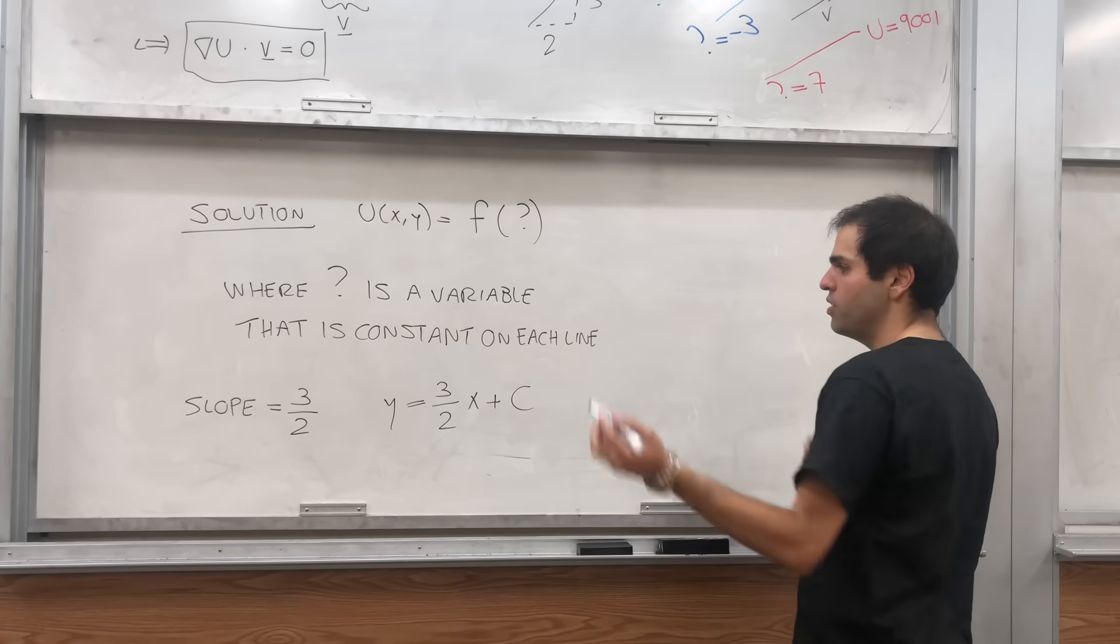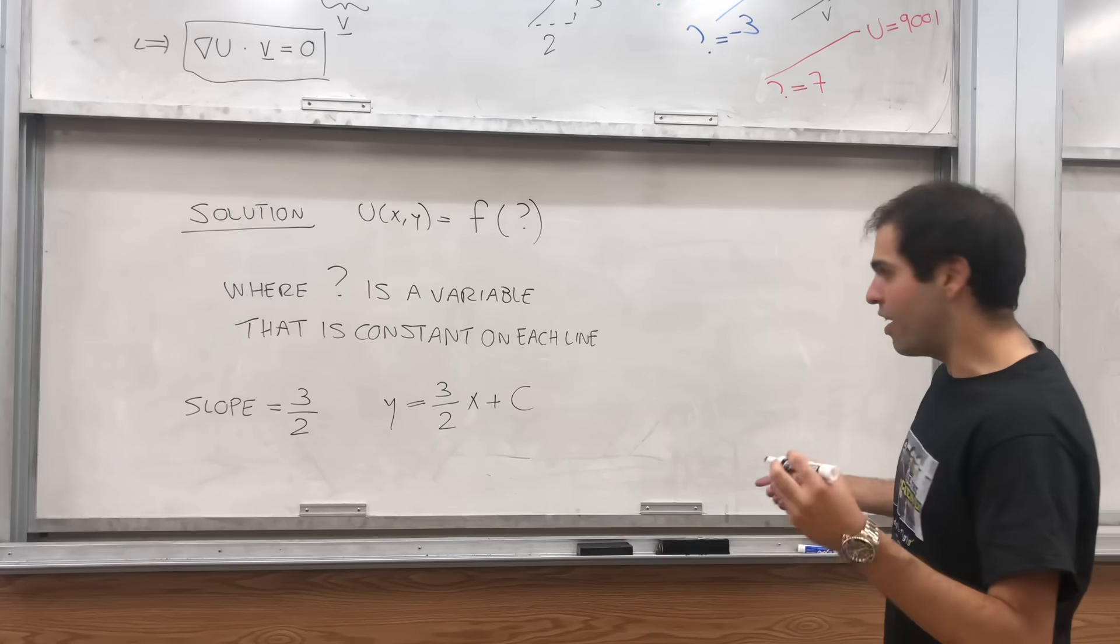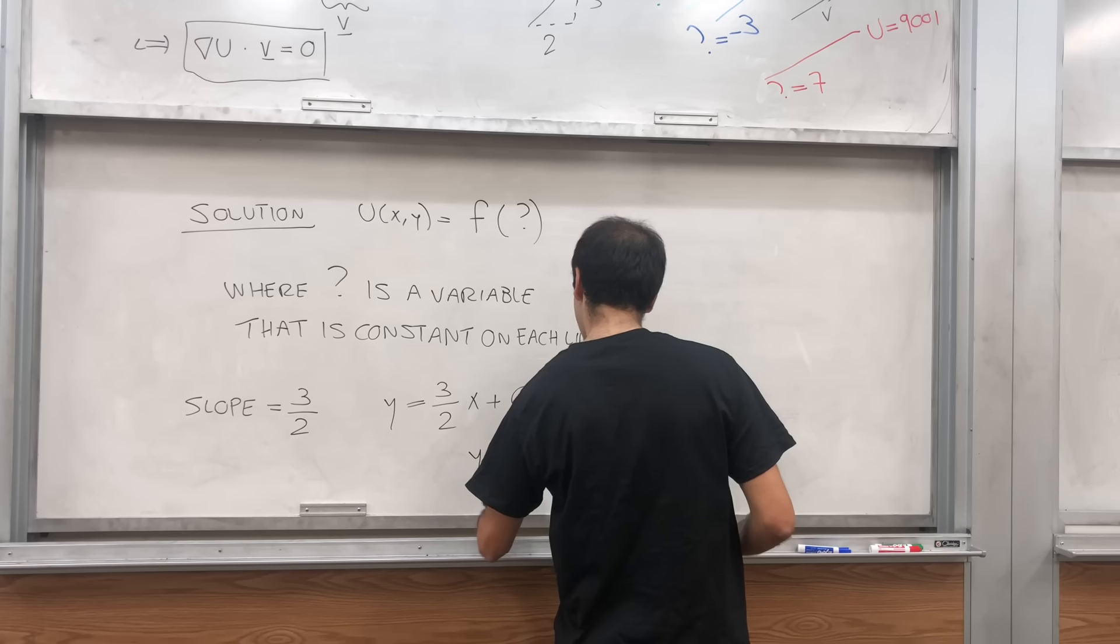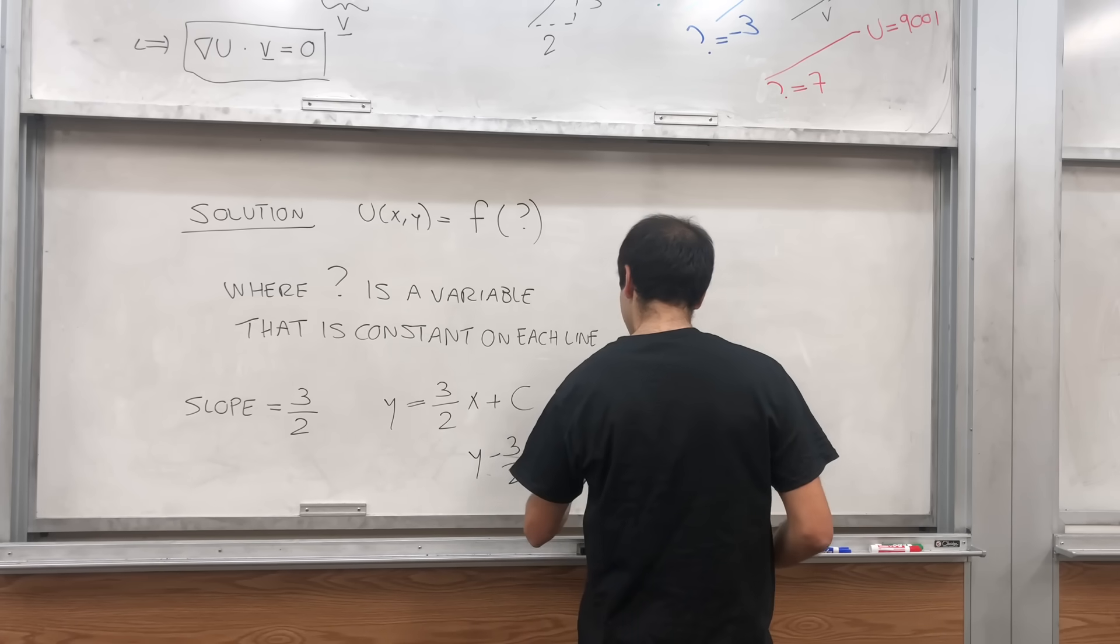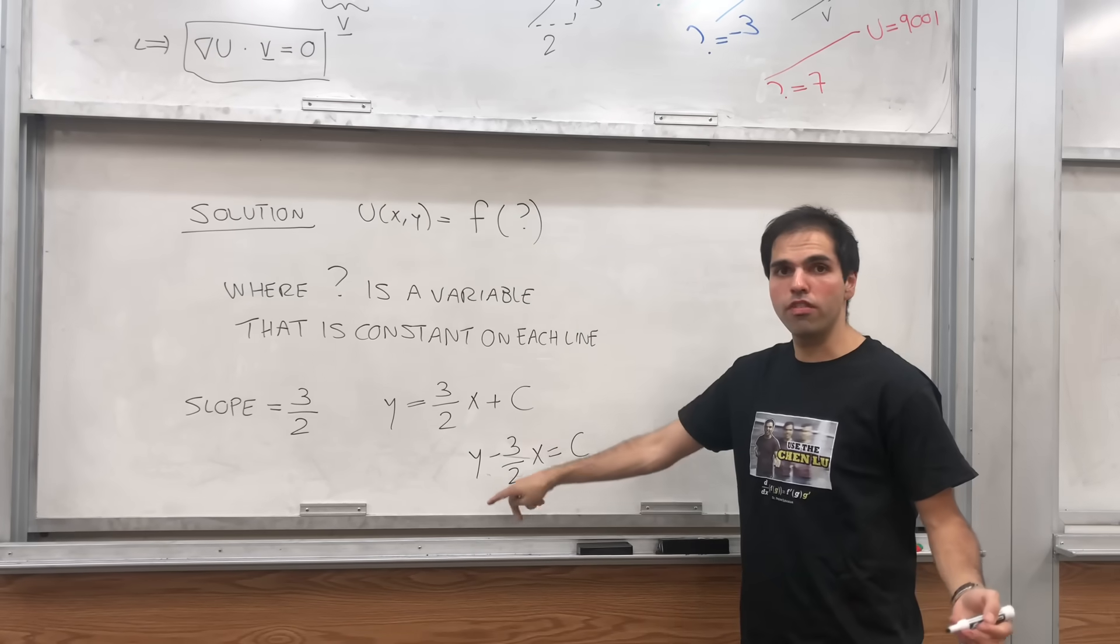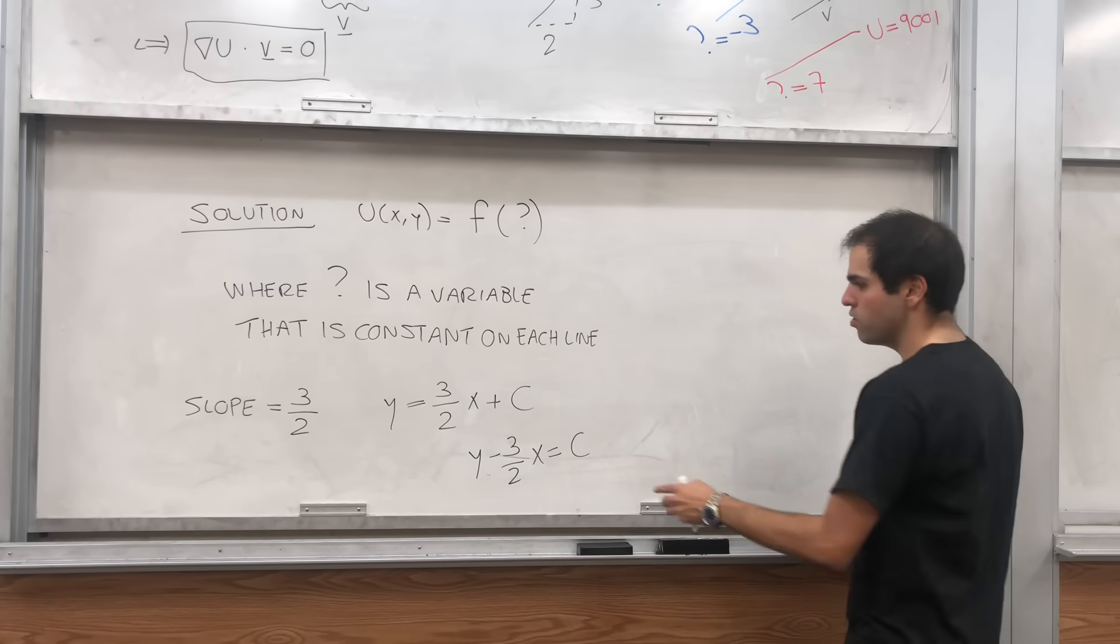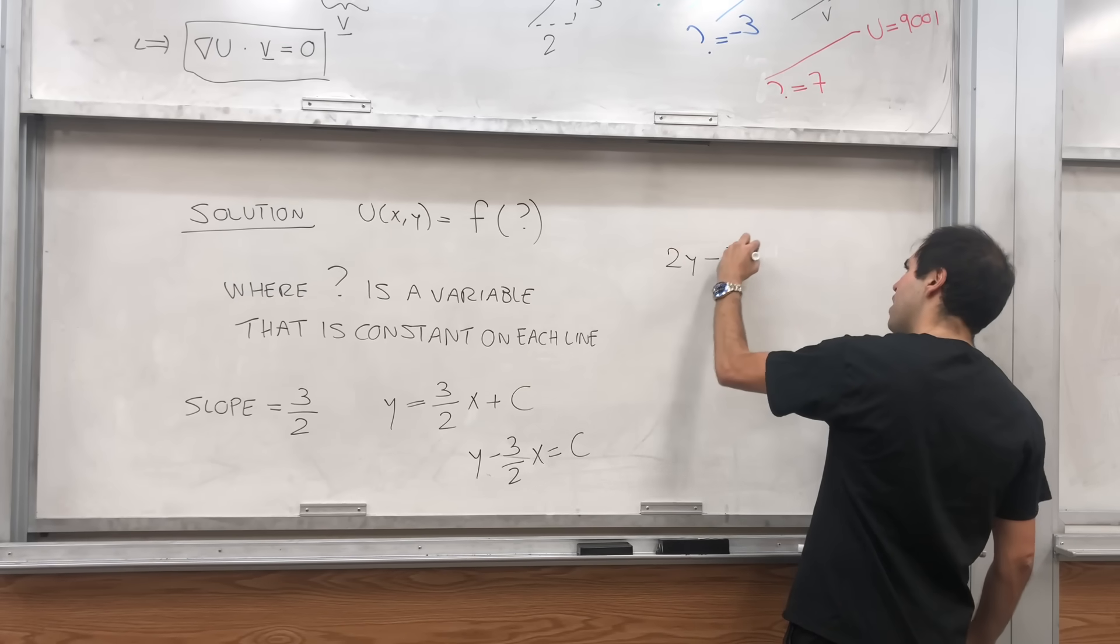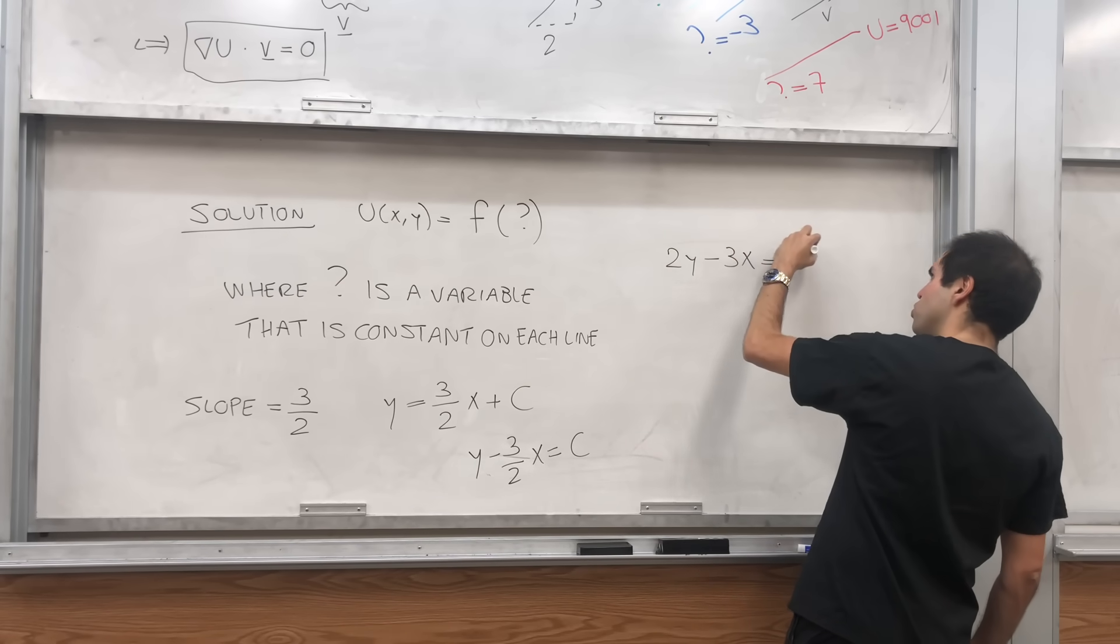And then, basically, you can rewrite this. So we get y minus 3/2 x equals c. By the way, that might be a choice of a variable, but let's make it easier. Let's multiply both sides by 2. And you get 2y minus 3x equals 2c, which is still constant, so we'll just relabel this as c.